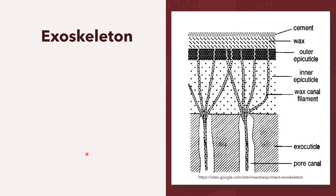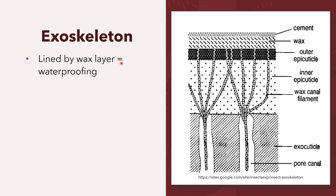This diagram shows the layers of the arthropod exoskeleton. The exoskeleton is composed of two layers. The first layer is the epicuticle, and the second layer is the procuticle. The epicuticle is considered to be the outermost, waxy, lipoprotein layer. The procuticle, which is composed of the exocuticle and the endocuticle, is the bulky inner layer that is made up of chitin. The exoskeleton is lined by a wax layer, which serves as waterproofing to protect the arthropods from desiccation.